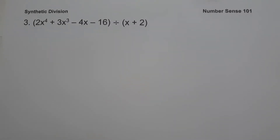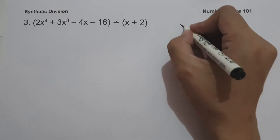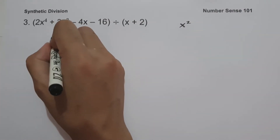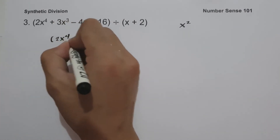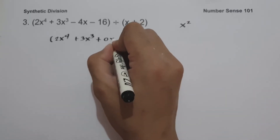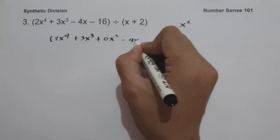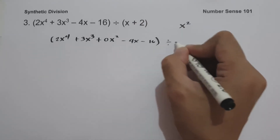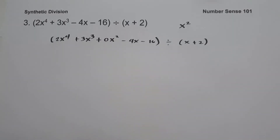On example number 3, we have the quantity 2x to the 4th plus 3x cubed minus 4x minus 16, divided by x plus 2. Since the dividend is in descending power but there is a missing term — x squared — we rewrite it as 2x to the 4th plus 3x cubed plus 0 times x squared minus 4x minus 16, divided by x plus 2. We then identify the coefficients of the dividend.